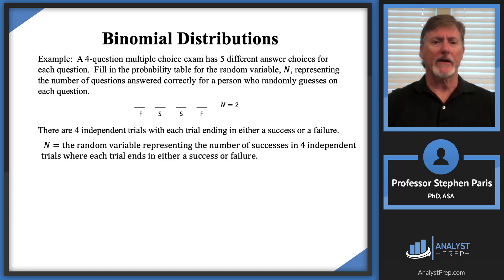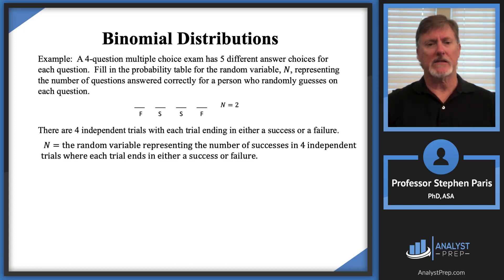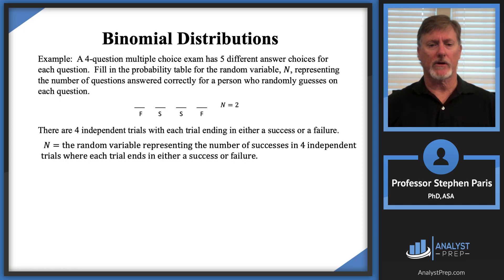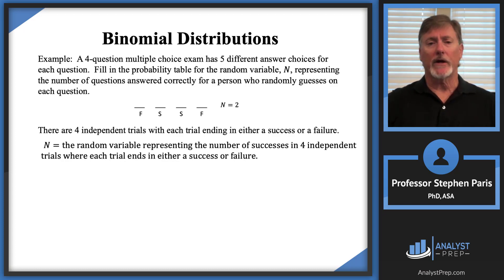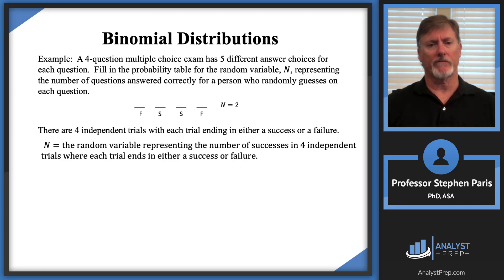A binomial distribution is a random variable representing the number of successes. In this case, Cap N represents the number of successes in four independent trials where each trial ends in either a success or a failure. Later on we'll generalize the four to another parameter, but in this particular question we're asked to fill in the probability table.